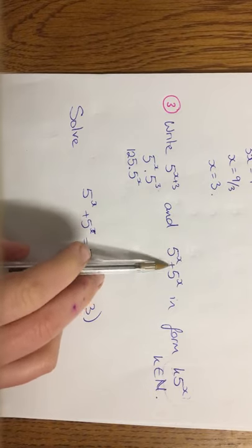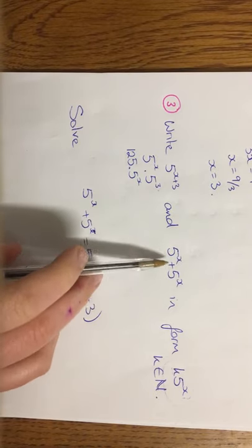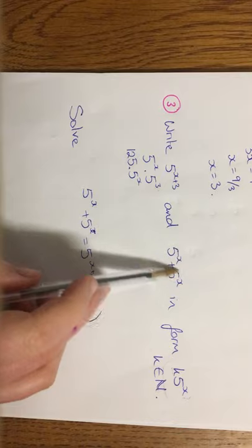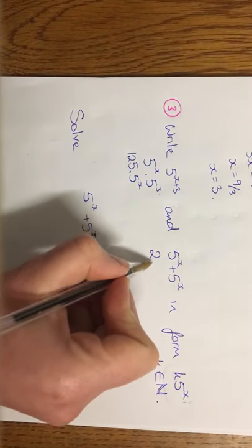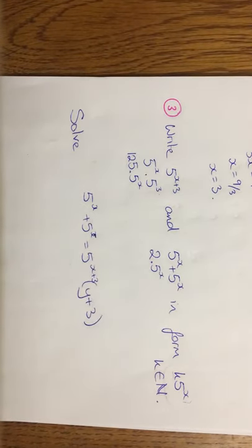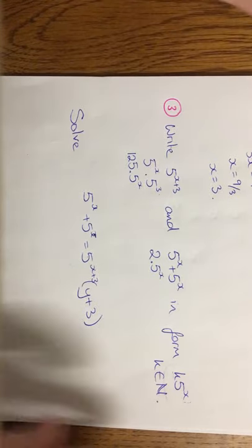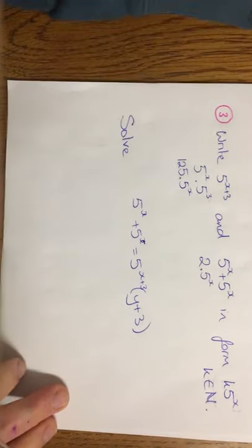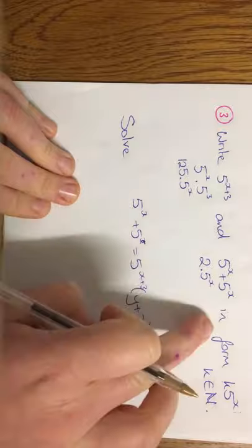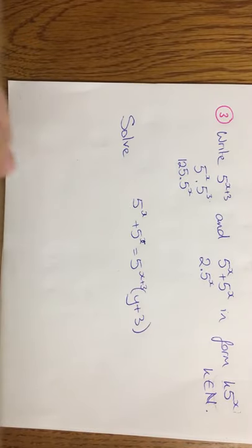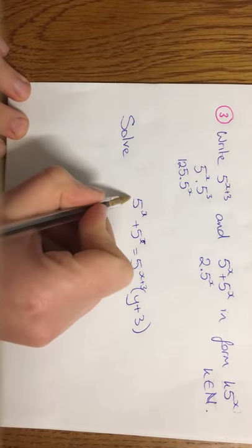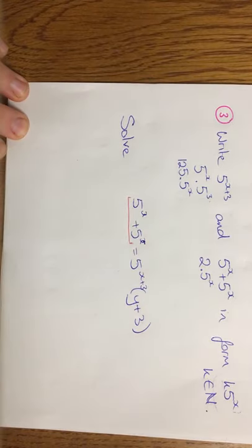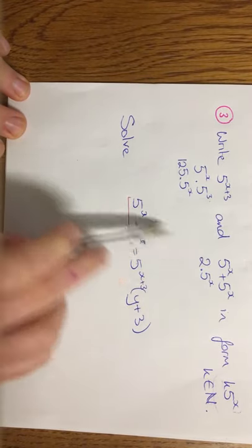The next one is 5 to the x plus 5 to the x. So how many of them do you see? I see 1, 2. So it's 2 by 5 to the x. And that's done. Then I want to solve this one here using what I've just done.